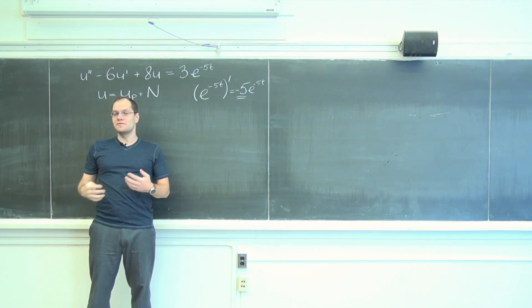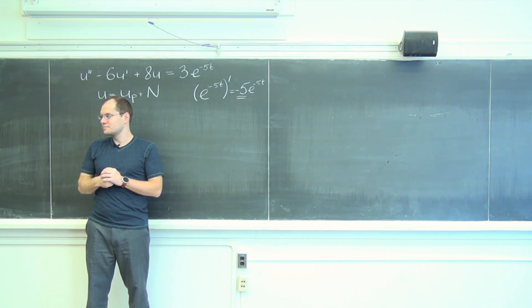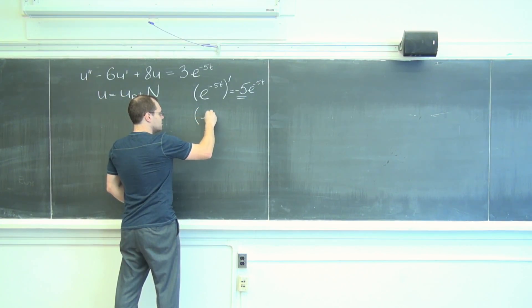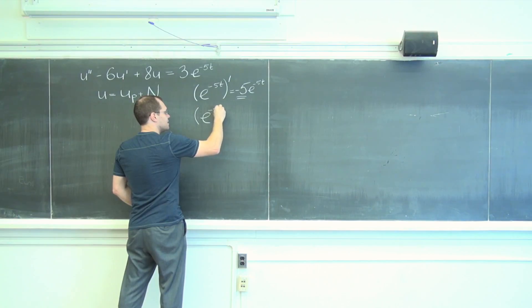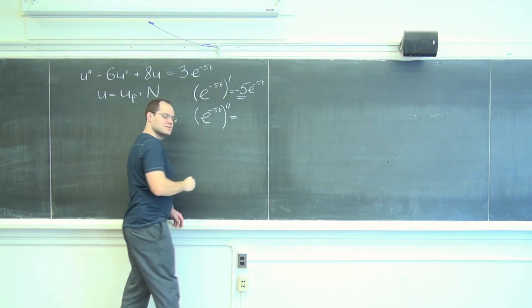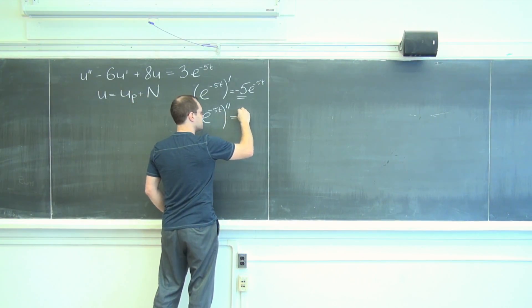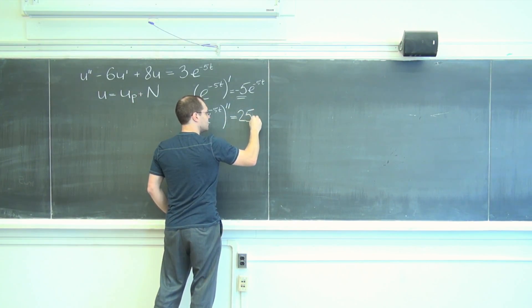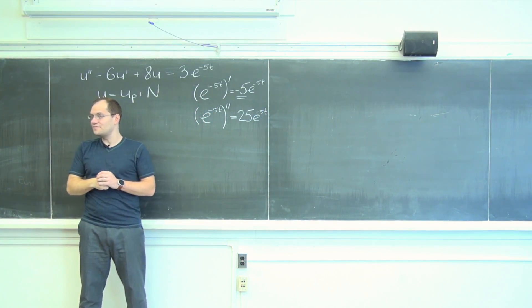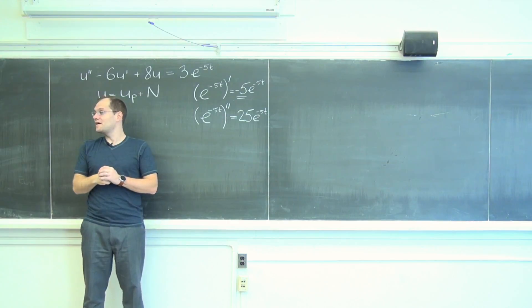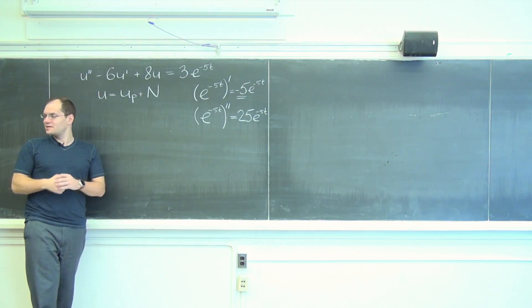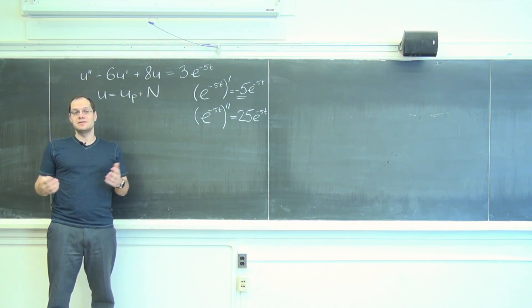Is it an eigenfunction of the second derivative operator? Yes. Yes. e to the minus five T second derivative equals 25 e to the minus five T. And what's the corresponding eigenvalue? 25. Okay, so I didn't say anything new, I just put it in linear algebra terms and everybody feels a little bit better about it.